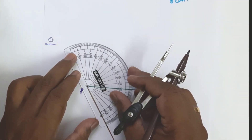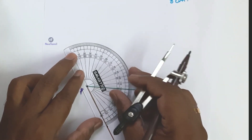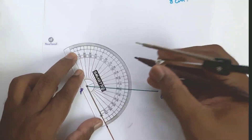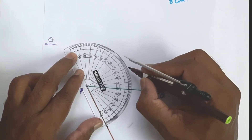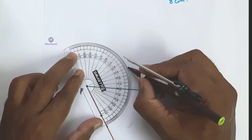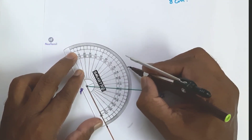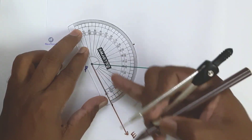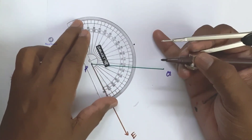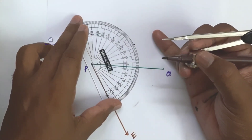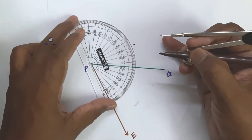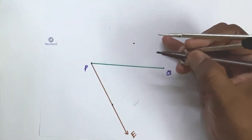At P, draw a ray PF such that angle EPF equals 90 degrees — meaning PE and PF are perpendicular to each other. Ray PF is now drawn perpendicular to PE.